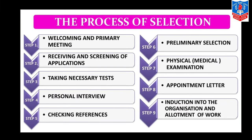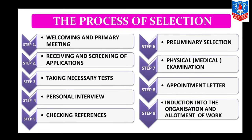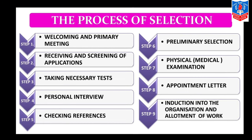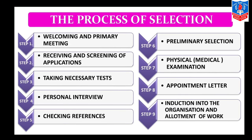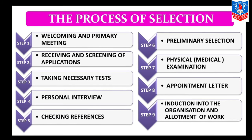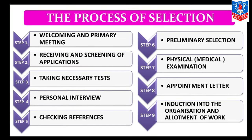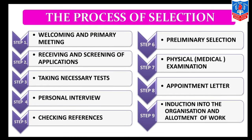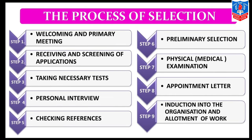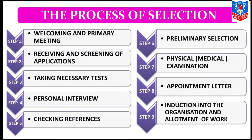Now let us learn the process in detail. The steps of the selection process are: Step 1 — Welcoming and primary meeting. Step 2 — Receiving and screening of applications. Step 3 — Taking necessary tests. Step 4 — Personal interview. Step 5 — Checking references. Step 6 — Preliminary selection. Step 7 — Medical examination. Step 8 — Appointment letter. Step 9 — Induction into the organization and allotment of work.